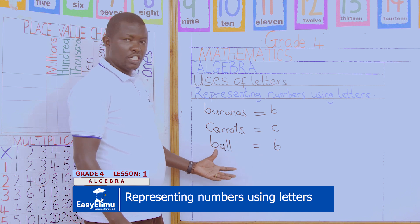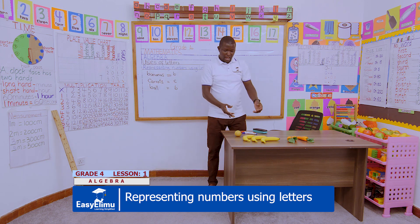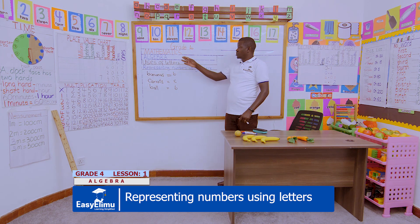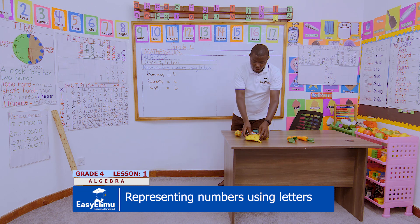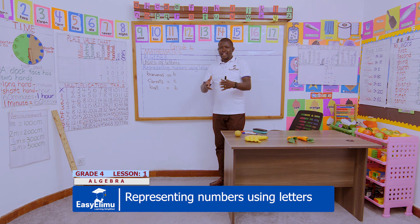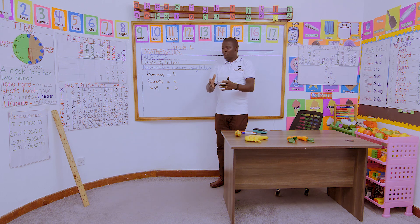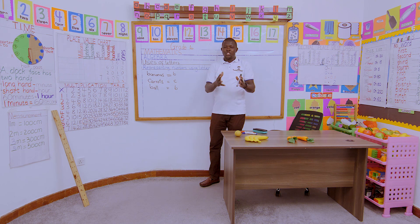As we have shown, we are representing items or objects using letters. Remember, algebra is the use of letters to represent certain numbers. Here we had bananas, so to represent the number of bananas we say someone has B bananas. To represent the carrots, we say Tom has C carrots.